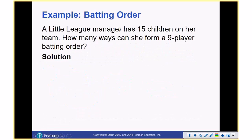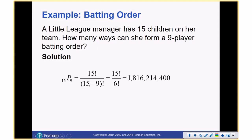A Little League manager has fifteen children — how many ways can she form a nine-player batting order? There it is: 15 permutation of 9. Notice the word 'batting order' — that's the key word.